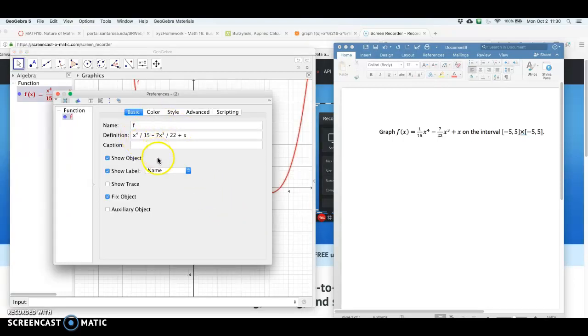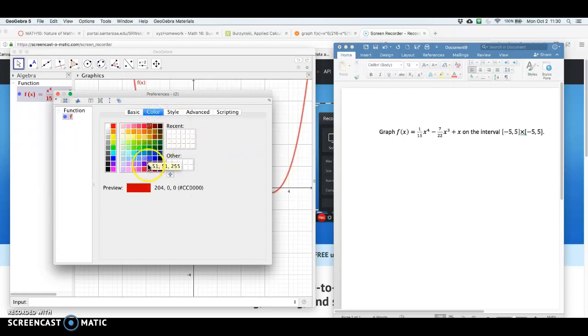And if I want, I could change what I call it. I could say, you know, f of x, show a label, and I can make this caption. Color, I could change the color to any of these colors right here, say purple.